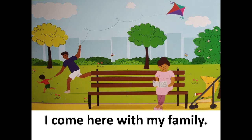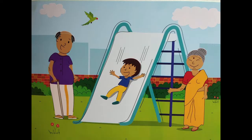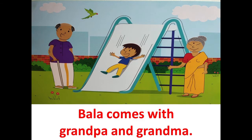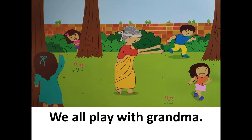Now I'm turning to the next page. Look at the picture — I'm sure you'll be able to tell what line comes under this picture. Can you guess? Correct! Bala comes with grandpa and grandma. Now let's turn to the next page. We all play with grandma.